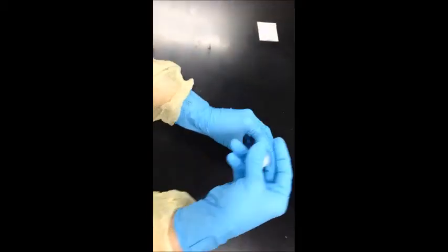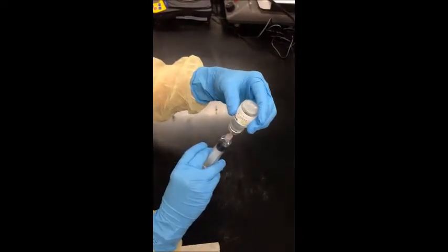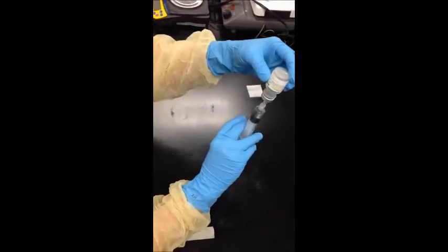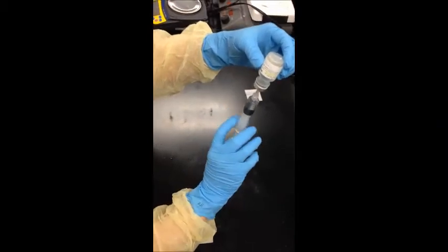Lift vial up with needle still in vial. Invert and draw up required amount of diluent into the syringe. Make sure not to block first air or touch any critical sites.